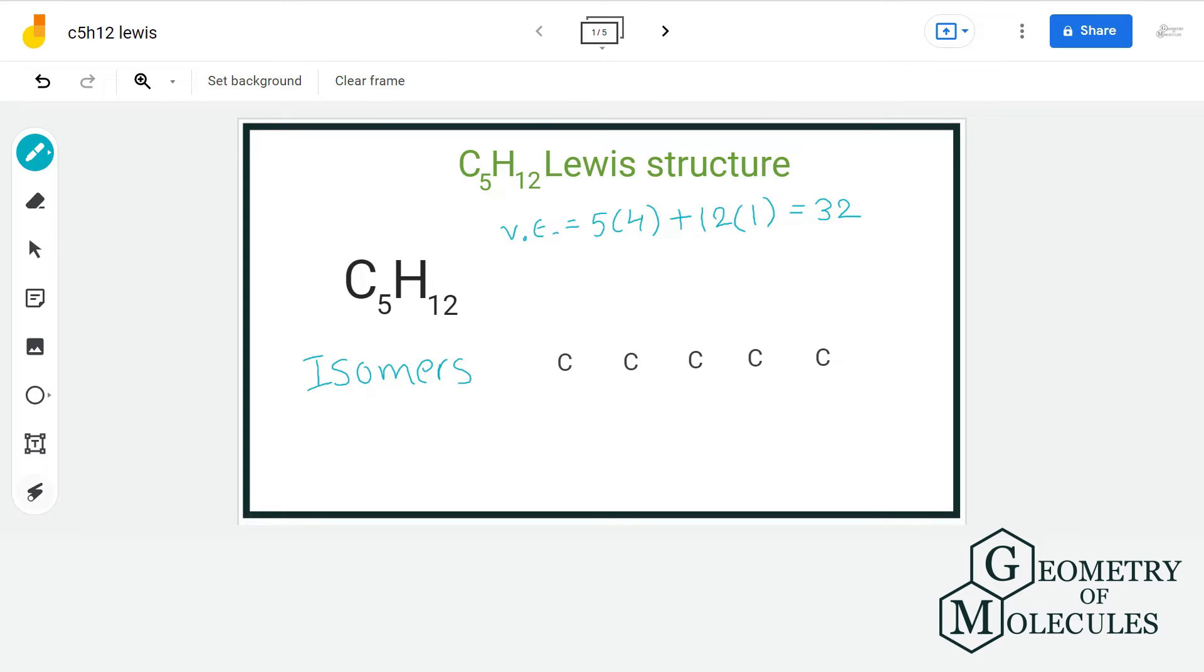For the first Lewis structure, we will arrange carbon atoms in series like this and then attach hydrogen atom to each carbon atom. We know that carbon can form maximum of four bonds. So, we will attach hydrogen to each carbon accordingly.